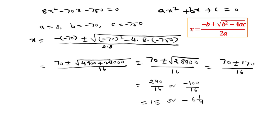Since the time taken to fill the tank cannot be negative, we discard the negative value. So the larger diameter tap will take 15 hours to fill the tank, and the smaller will take 10 hours extra, that is 25 hours. So the answer is 15 and 25 hours respectively.